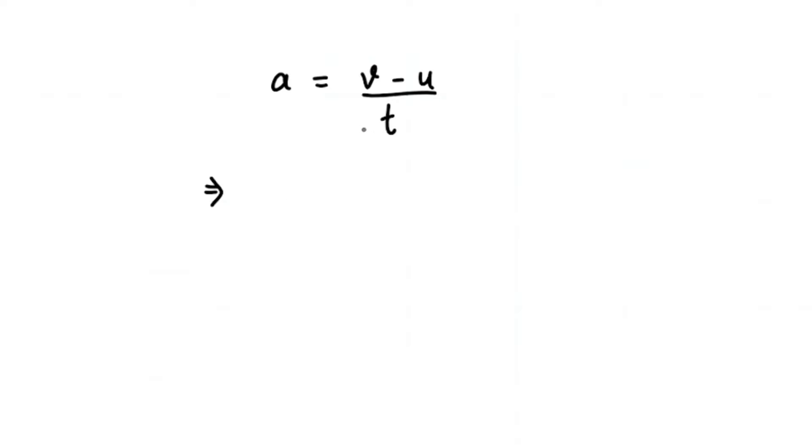Let's see. So first what we are going to do is we are going to move that time over there and we get a times t equals to v minus u, and then when we move this u to that side of the equals to, it becomes plus u, right? So we get u plus at equals to v.